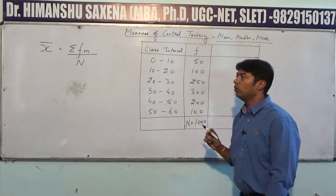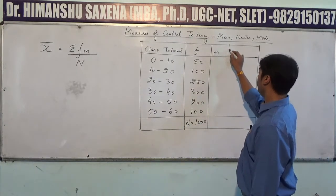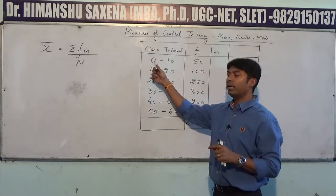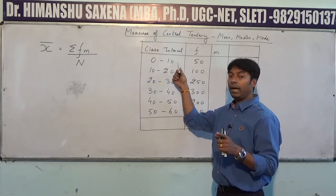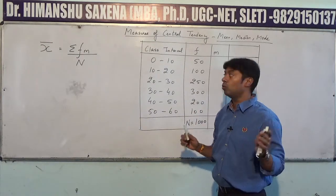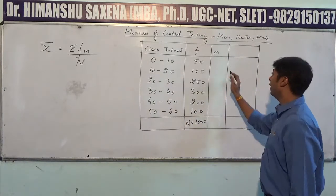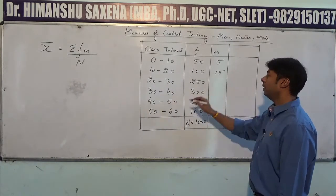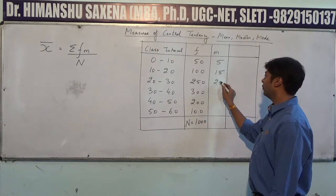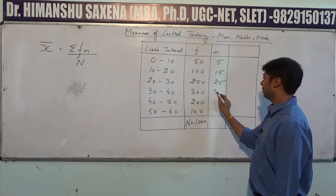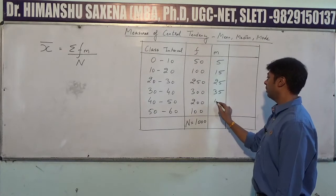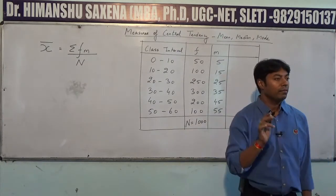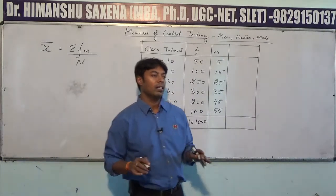Now we need to calculate the value of summation fm, where m stands for midpoint. The midpoint is calculated by adding the lower limit and upper limit and dividing by 2. So: 0+10=10, divided by 2 equals 5. Next, 10+20=30, divided by 2 equals 15. The midpoint of 20–30 is 25, of 30–40 is 35, of 40–50 is 45, and of 50–60 is 55.